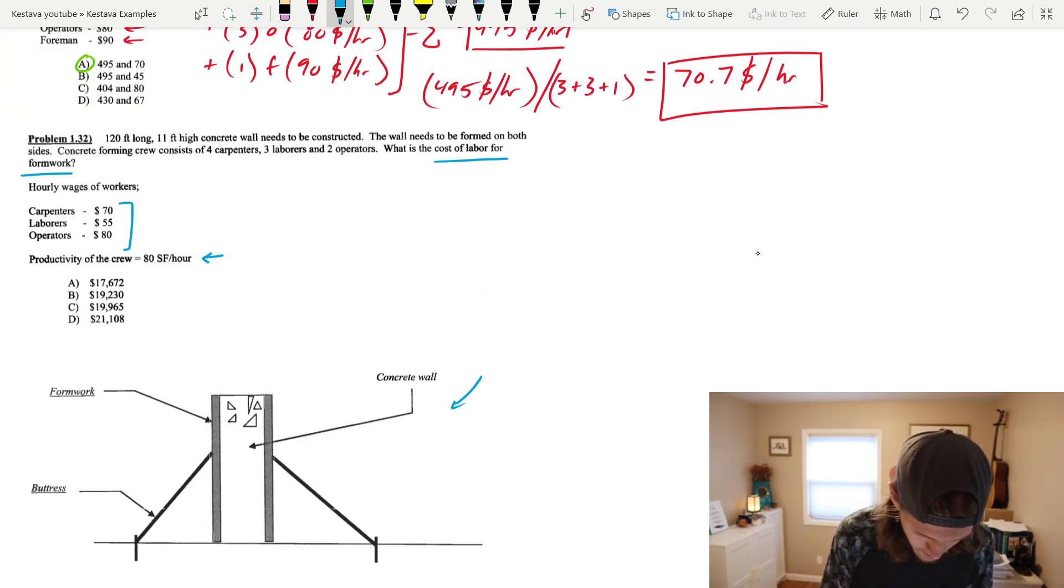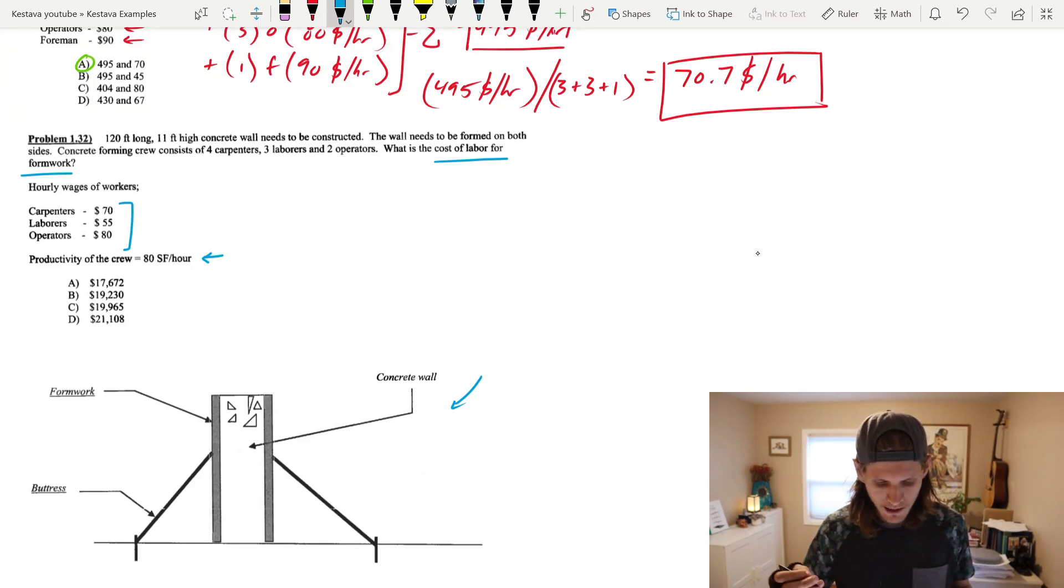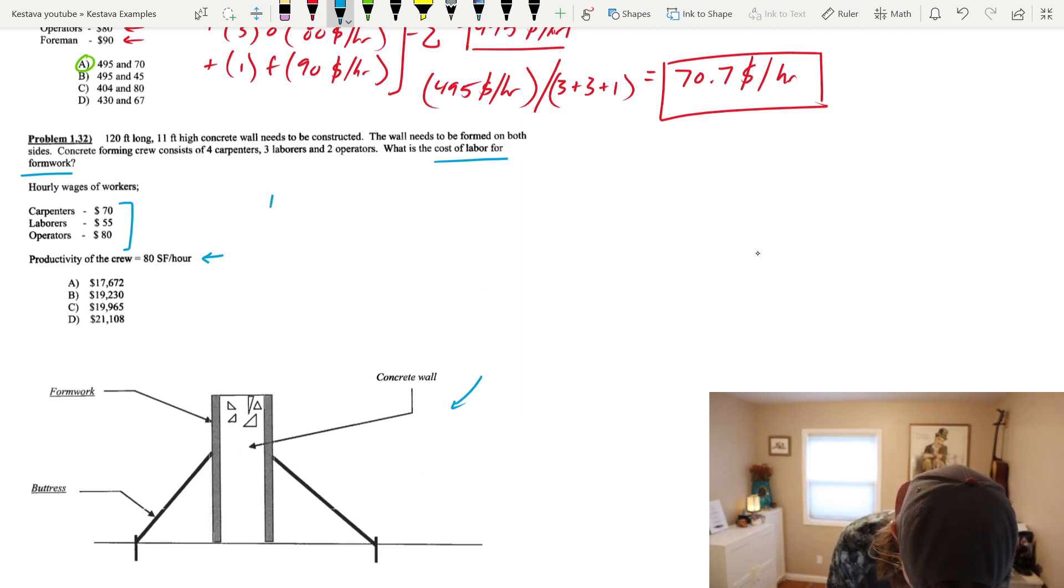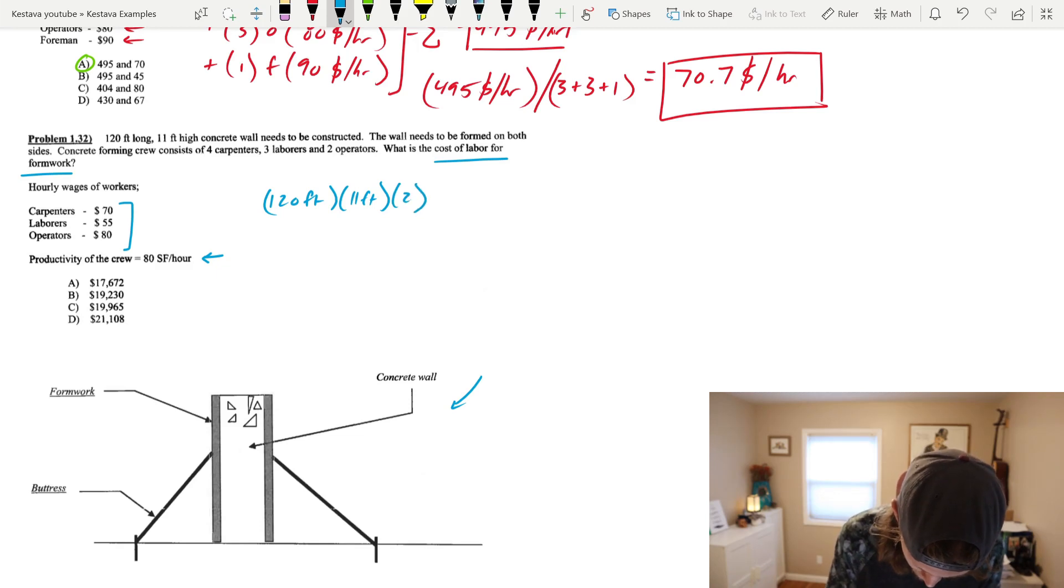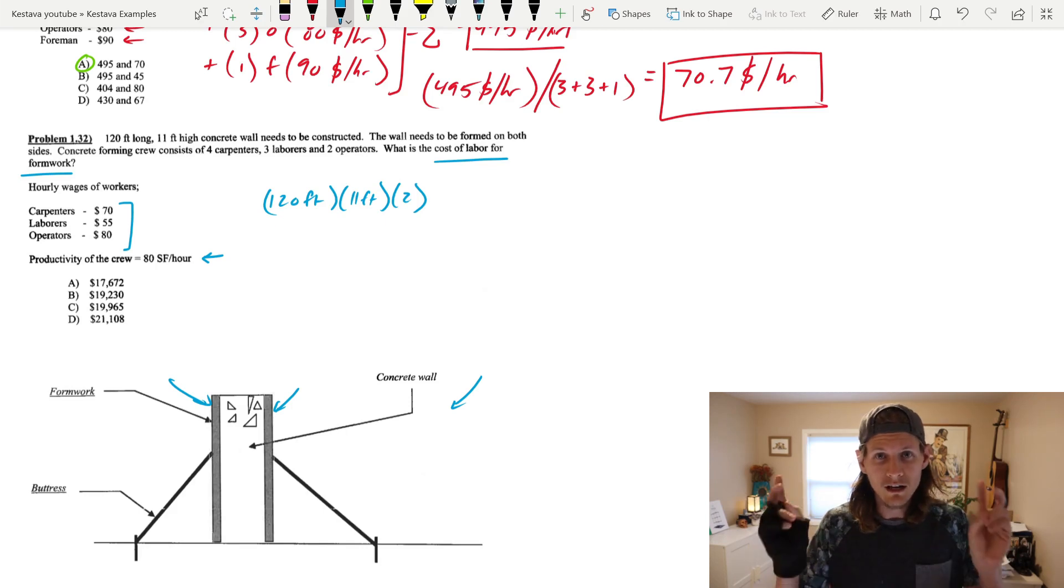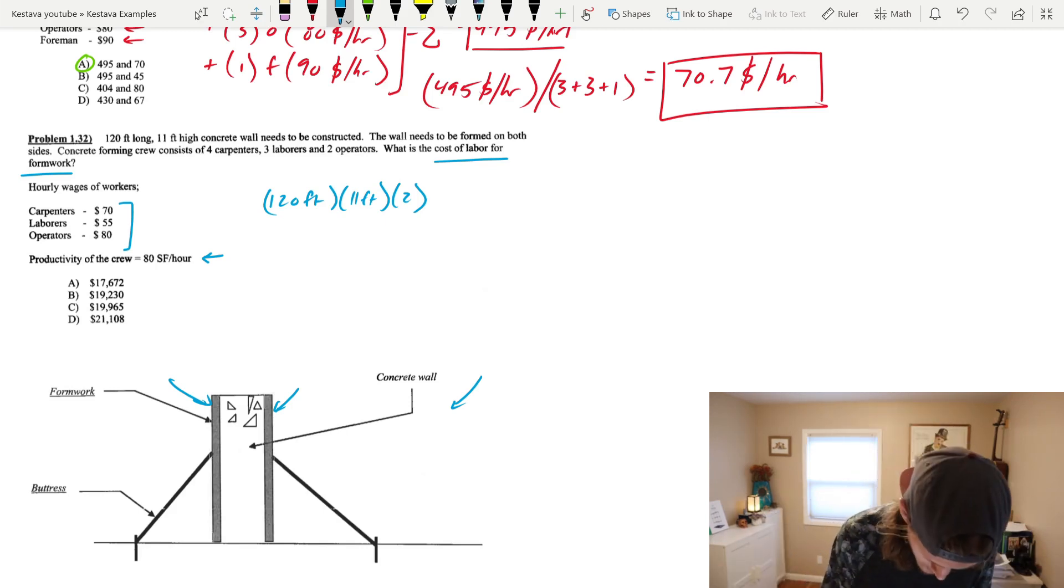So first, what I'm going to do here is find the total area of formwork that needs to be constructed. So we have 120 feet by 11 feet high, and you might be thinking, there's your area of your wall right there, right? Well, hang on. You still need to multiply by two because you need formwork on both sides of the concrete future wall in order to make the concrete wall. So you have this guy here, and you have this wall right here. So you need to multiply that area by two, which gets us a total area of 2,640 square feet.